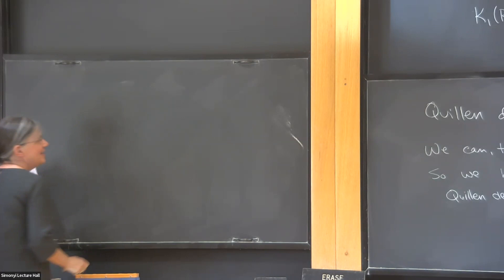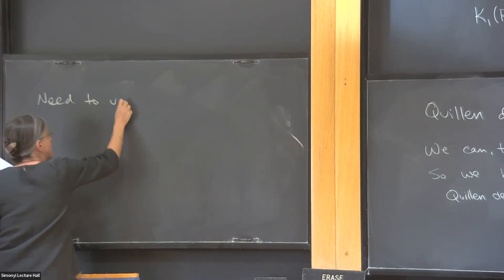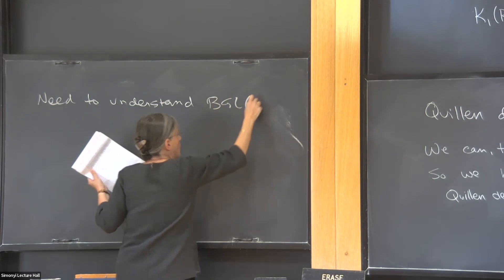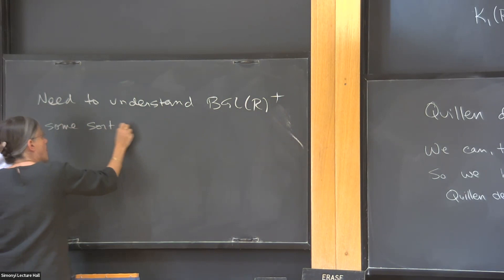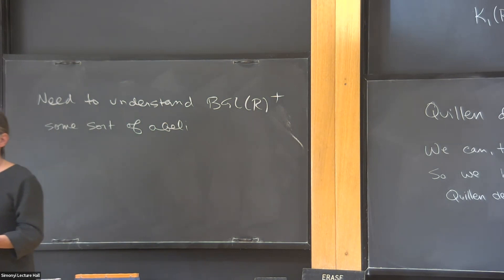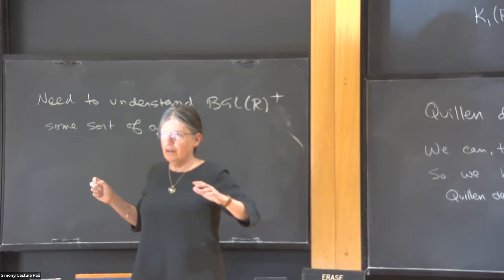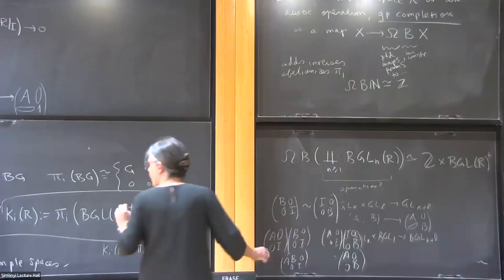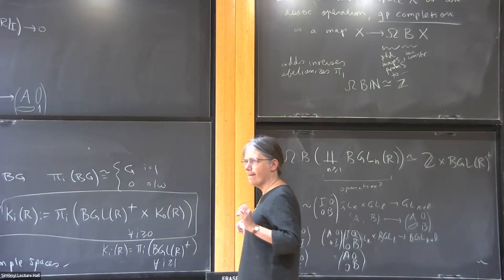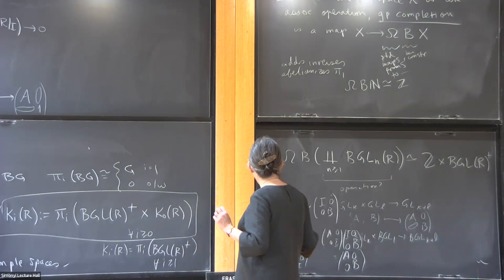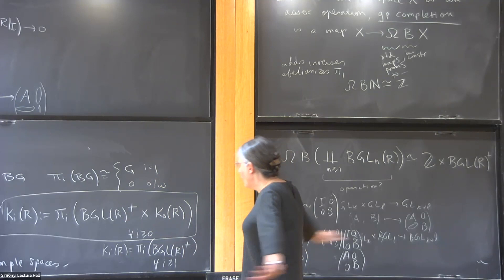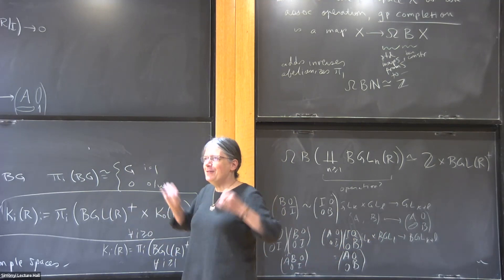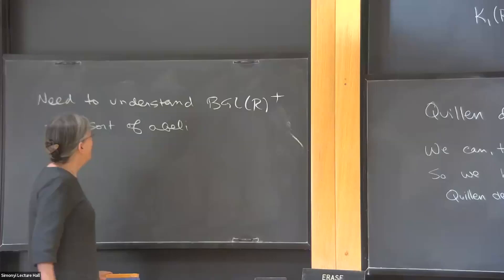So I need to understand GL(R)⁺, some sort of space. The GLNs are going to be the only non-abelian groups, but the homotopy groups are going to be abelian and more complicated. I need to understand some sort of abelianization. When you have things with matrices, you often have to abelianize them with traces. So can you use traces? It's not obvious how you would.